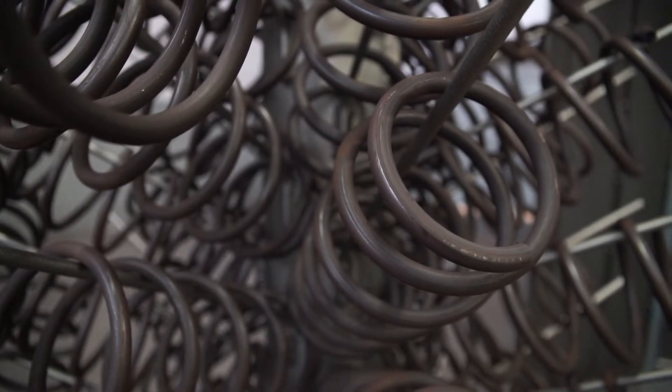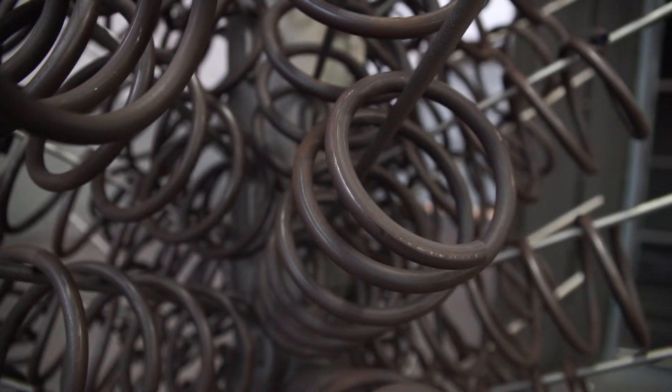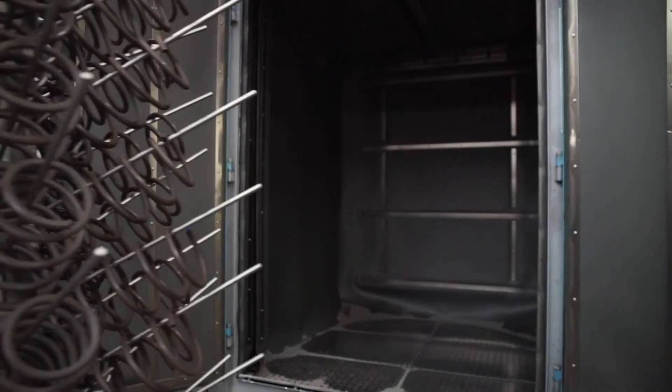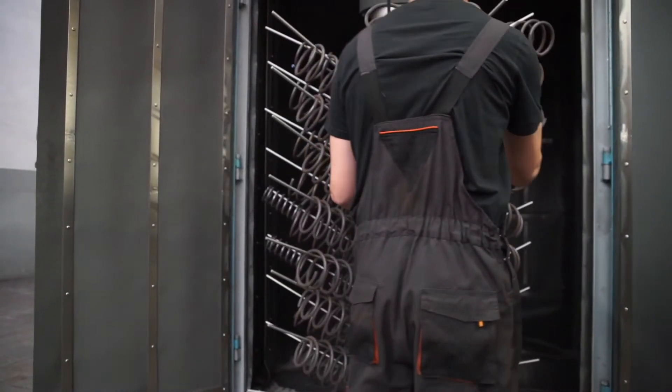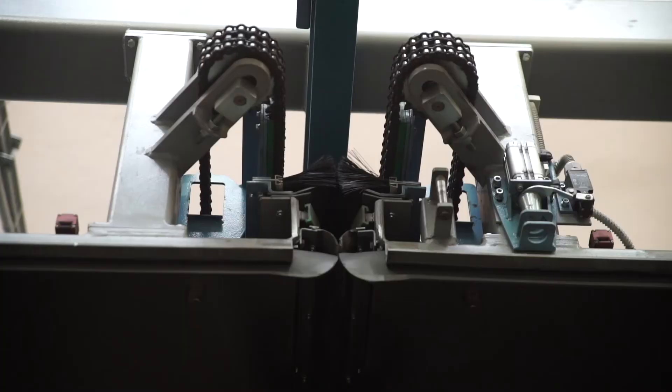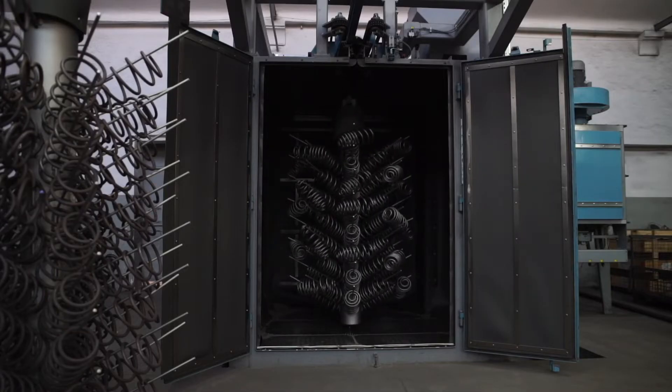In addition to internal stresses, the coiling process may also create microcracks on the wire surface. The microcracks are eliminated in the process of shot peening, during which small cast iron balls hit the surface of the wire with high speed.